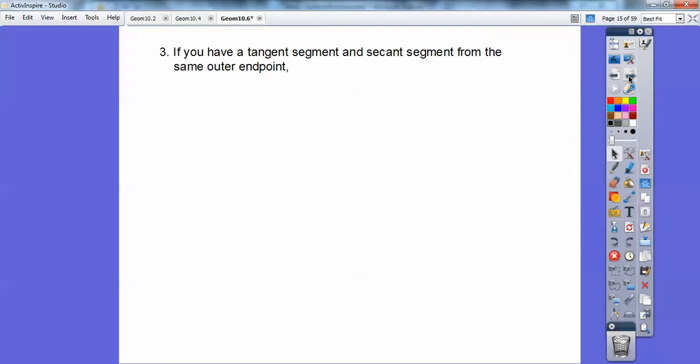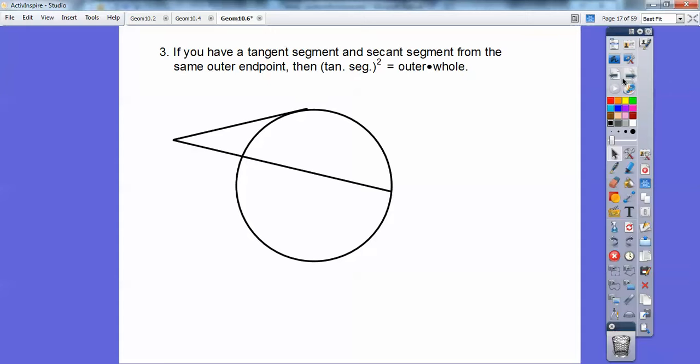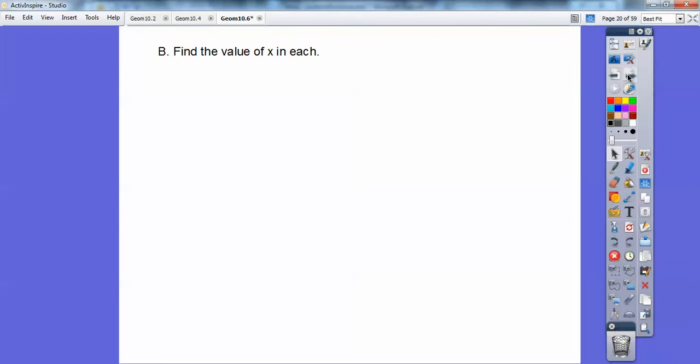So if you have the same tangent segment and secant segment from the same outer endpoint, see how this tangent segment right here and this secant segment has the same outer endpoint, then it goes tangent segment squared equals outer times whole. So for example, if I put some lengths in there, if that's 24, 16, and X, so 24 squared equals 16. Don't forget, the whole length is 16 plus X. And then you do your math and crank out and you get X equals 20. 24 squared is 576.